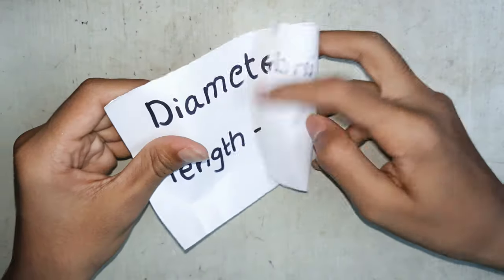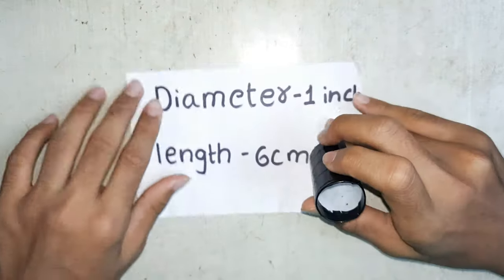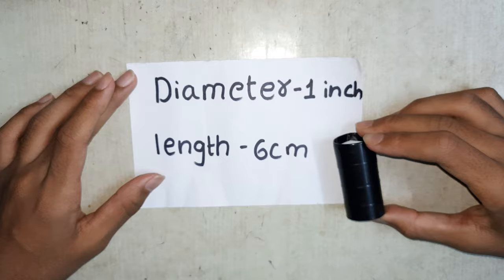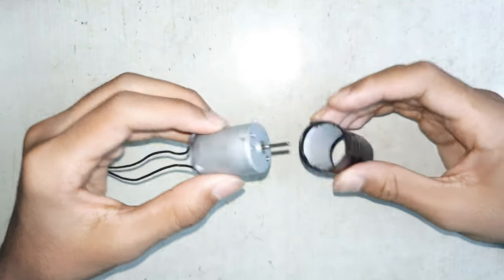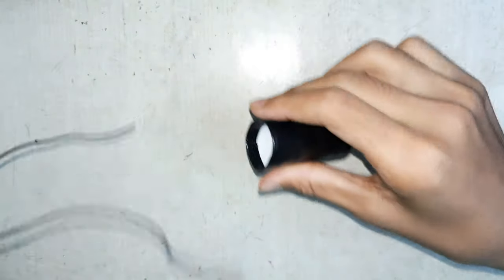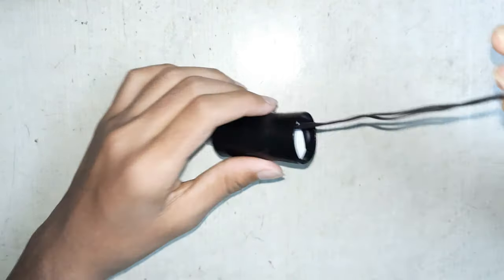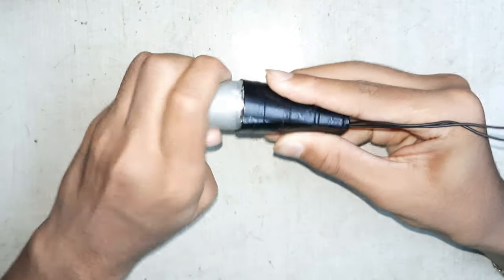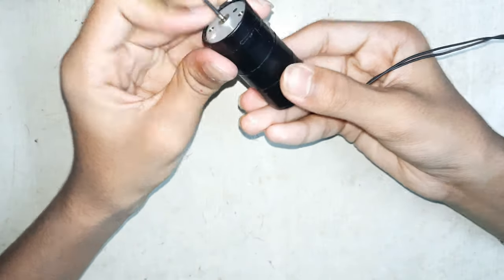Now take a PVC pipe with diameter 1 inch and length 6 centimeters. Now take a big toy motor, the engine motor, and put it into the PVC pipe. The motor is fixed exactly into the PVC pipe.